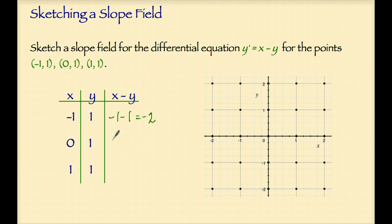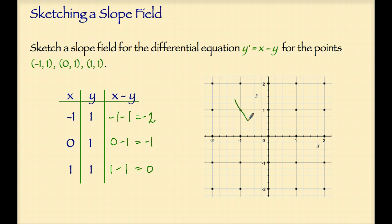For the point 0 comma 1, the slope will be 0 minus 1, which is negative 1. And for the point 1 comma 1, the slope will be 1 minus 1, which is 0. Now we're going to draw short line segments with the slopes that we have found at each of these three points. At the point negative 1 comma 1, I will sketch a short line segment with the slope of negative 2 — it's just an estimate, it won't always be exact. At the point 0 comma 1, I draw a short line segment with the slope of negative 1. And at the point 1 comma 1, I draw a short line segment with the slope of 0.